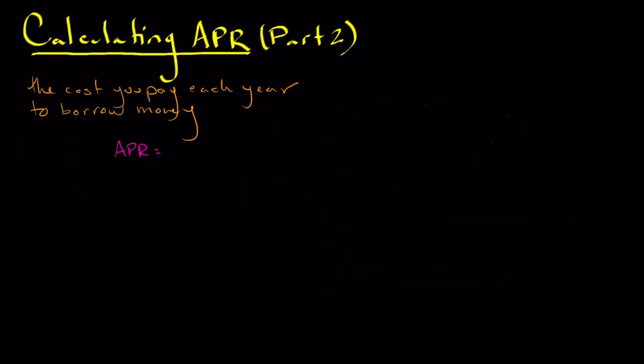So APR is going to be equal to 2 times n times i divided by our principle multiplied by n plus 1.